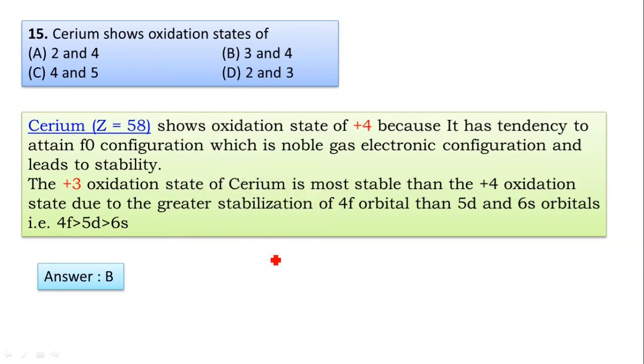Cerium shows oxidation state of: Cerium, atomic number 58, shows oxidation state of +4 because it has a tendency to attain F⁰ configuration, which is noble gas configuration and leads to stability—that is +4 oxidation state.